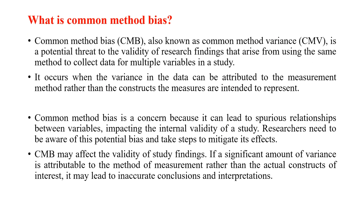Let us start by talking about what common method bias is. I've summarized it into four points. First, common method bias — also known as common method variance — is a potential threat to the validity of research findings that arises from using the same method to collect data for multiple variables in a study. Second, it occurs when the variance in the data can be attributed to the measurement method rather than the construct the measures are intended to represent.